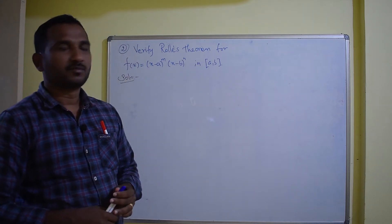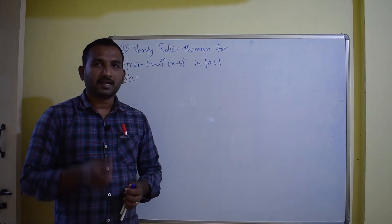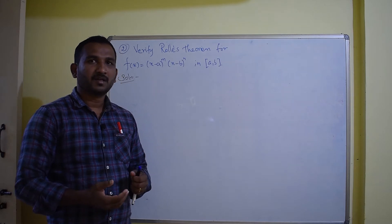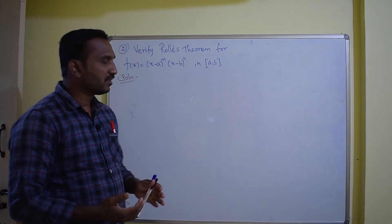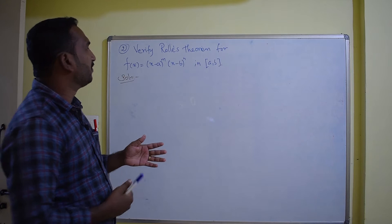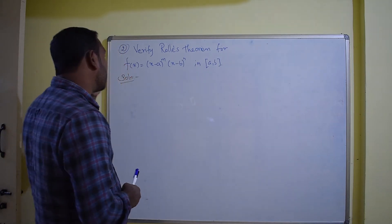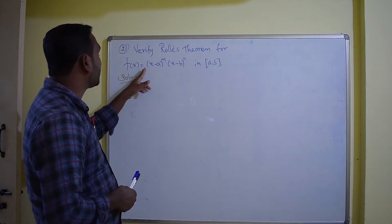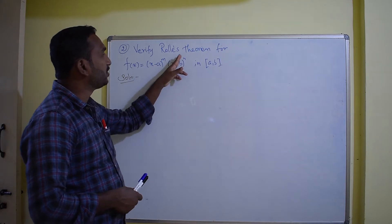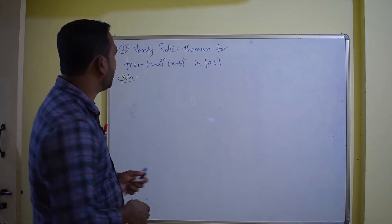Hi everyone, welcome to Mathematics Solution channel. In this video, we have another problem based on Rolle's theorem. We want to verify whether it is satisfied or not. The given function f of x is equal to (x minus a)^m times (x minus b)^n in the closed interval [a, b].